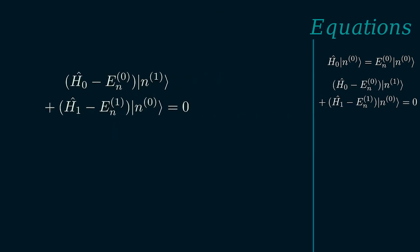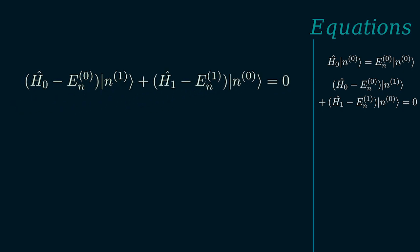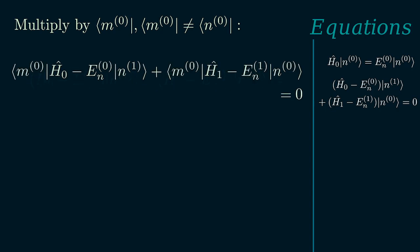With that out of the way, let's take a look at how we can find the eigenstates. Remember that now we are trying to find an expression for the ket n1. Now we'll take this equation and multiply it by the bra m0 from the left where m0 is different from n0 and obtain an equation like this. And we'll simplify the second term.